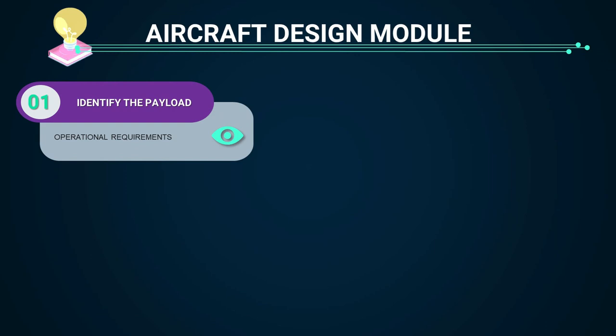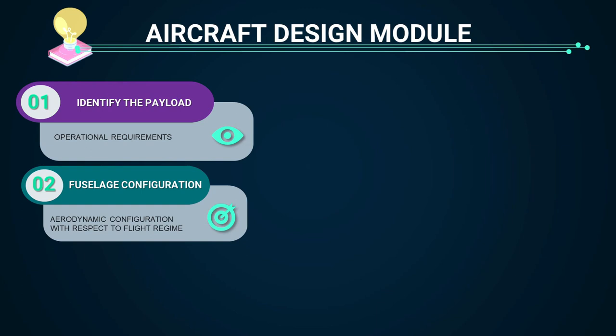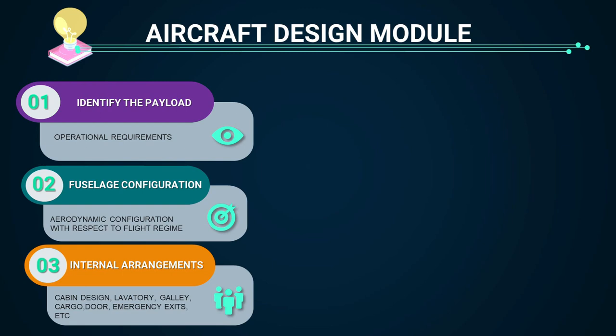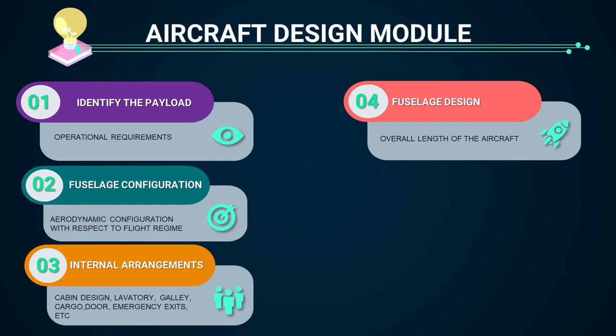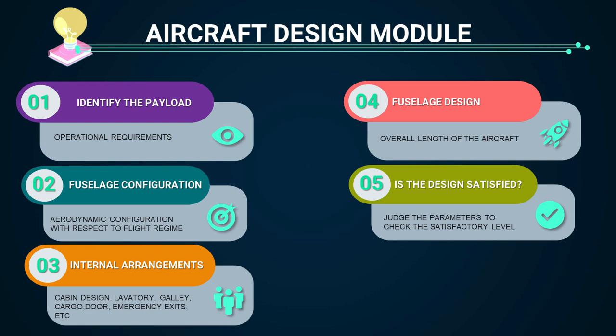In this module, you will learn the process of fuselage design and design thumb rules based on operational requirements. We will cover fuselage configurations and internal arrangements like cockpit design, engine design, cabin design, length of the cabin nose cone, length of the rear fuselage, and finally the total length of the fuselage, satisfying the design requirement by means of fineness ratio.